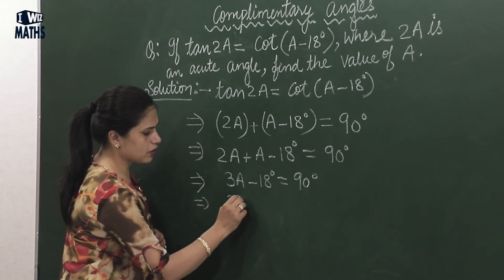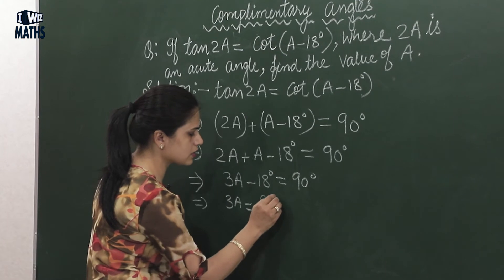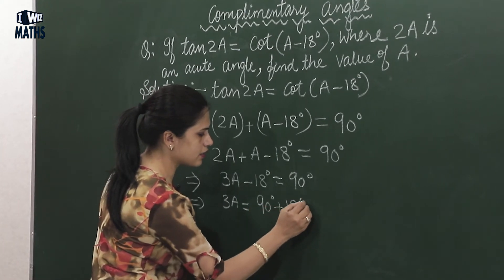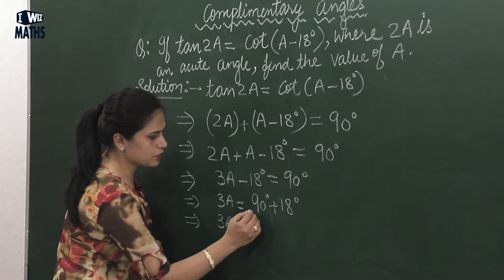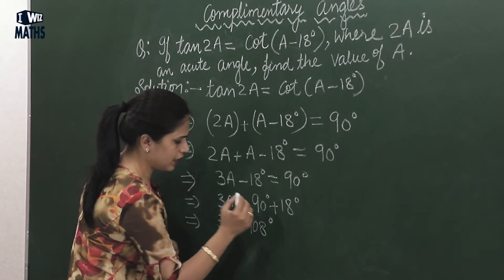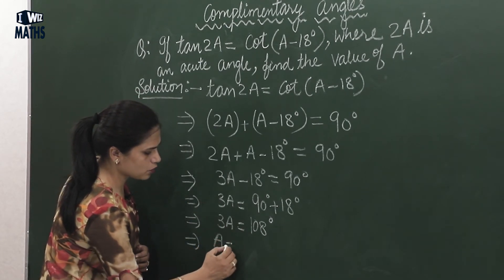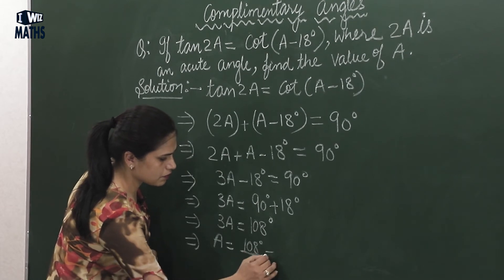So here what will be the value of 3A? If I take 18 to the other side, it becomes 90° + 18°. How much? 3A equals 90 plus 18: 8, 9 and 1 is 10, 108°. So the value of A here will be 108° divided by 3.